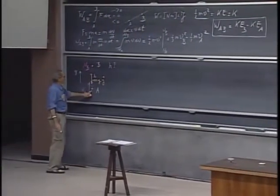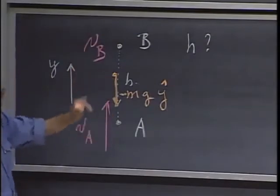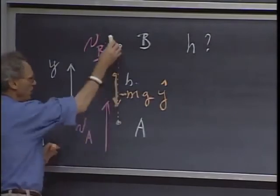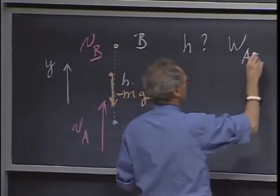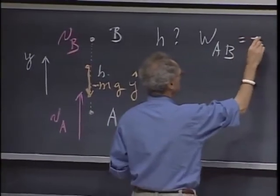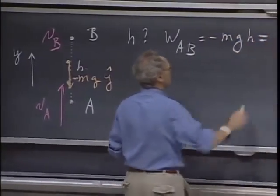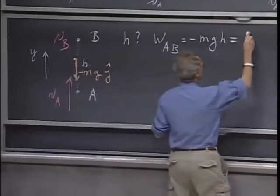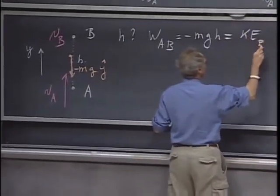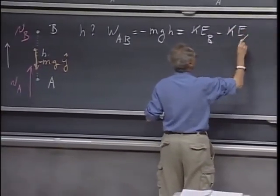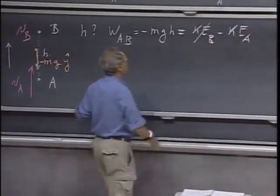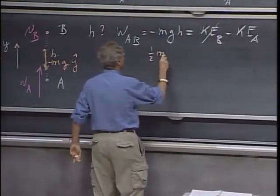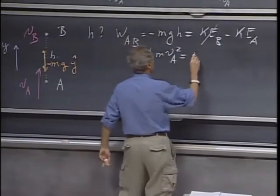So I can write down that the work that gravity is doing in going from A to B, that work is clearly negative. The force is in this direction and the motion is in this direction. So the work that gravity is doing in going from A to B equals minus mgh. That must be the kinetic energy at that point B minus the kinetic energy at point A. This is zero because it comes to a halt here. And so you find that one-half m vA squared equals mgh.